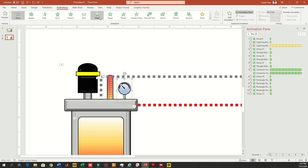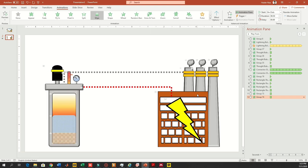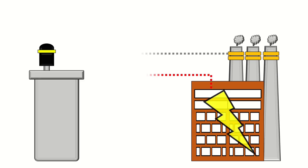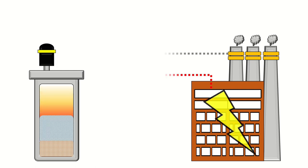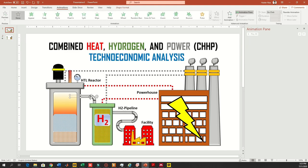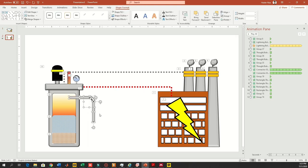To make the animation automatic you can also use Before Previous or After Previous, but I'm not adding those to keep it simpler for you. So whenever you click, the item comes. I'm clicking and another item comes, then the second, then third, then the reactor, temperature gauge, and pressure gauge. For beginners, I recommend on-click animation — it's easier, and you can later convert to a video for automatic triggering.